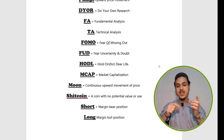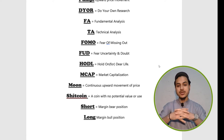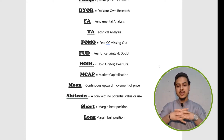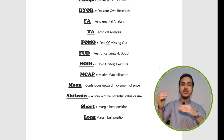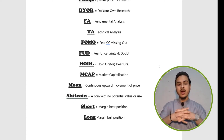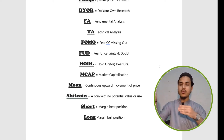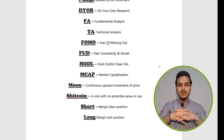Market cap, or MCAP, is used for market capitalization — how much fund is present in the market or in any coin. Moon — the continuous upward movement of a coin is called moon, as in 'to the moon' or 'this coin is going to the moon.'